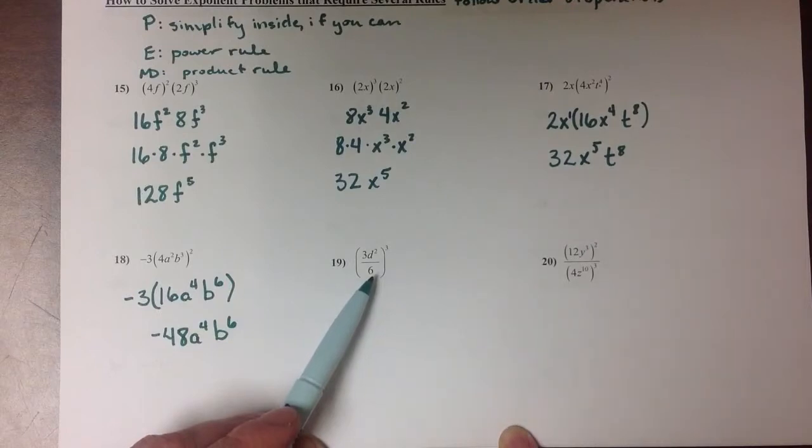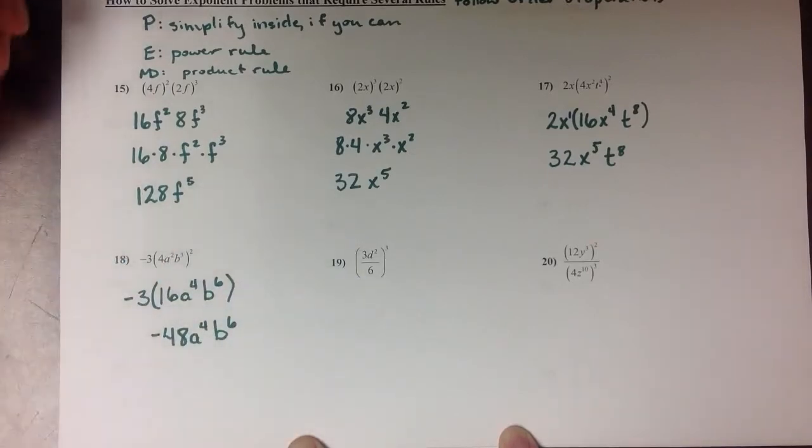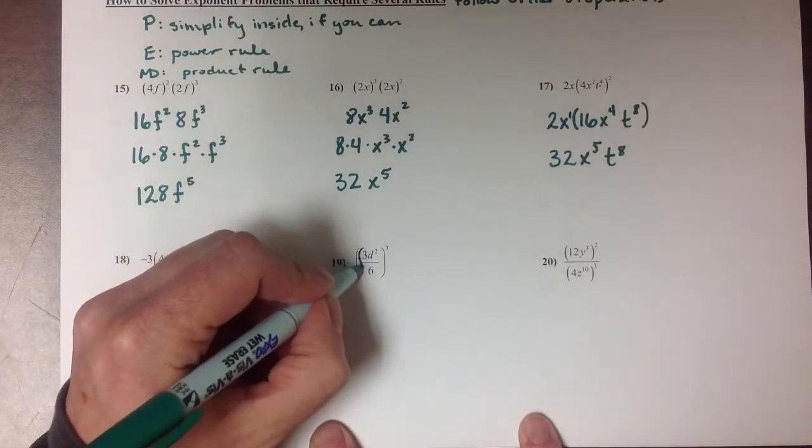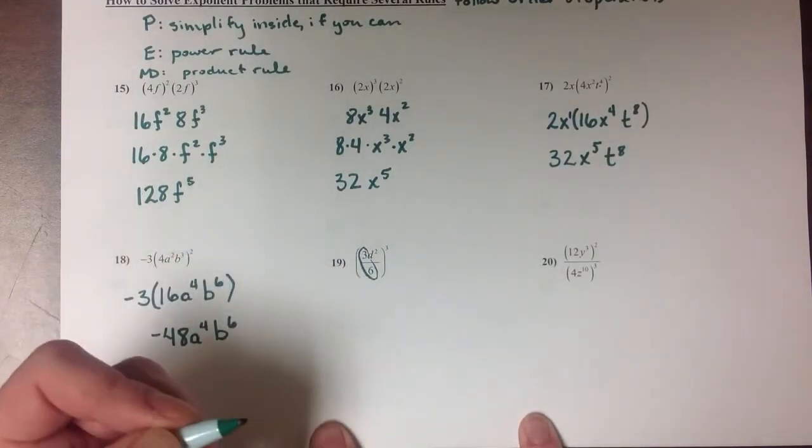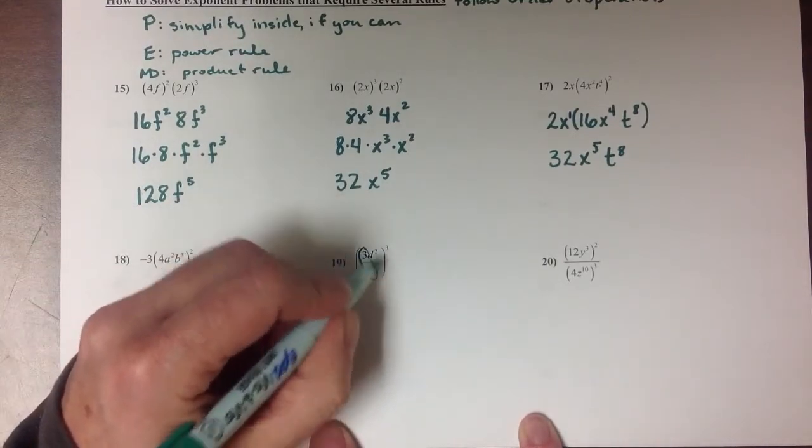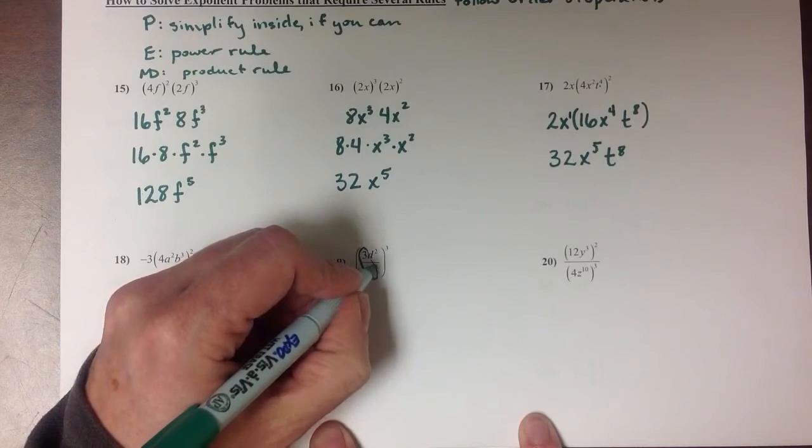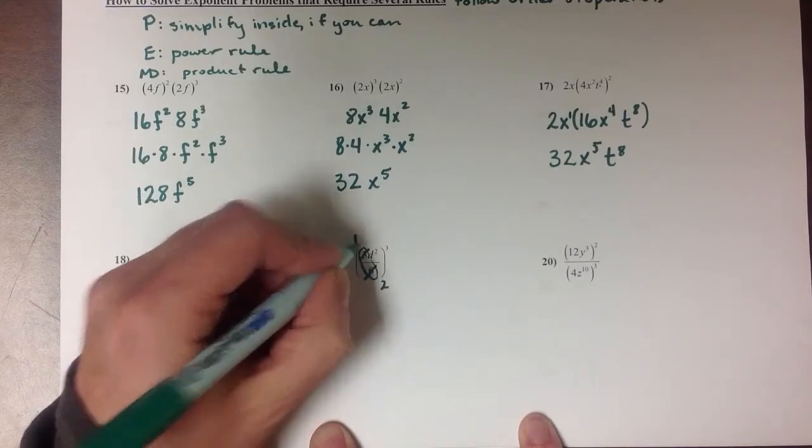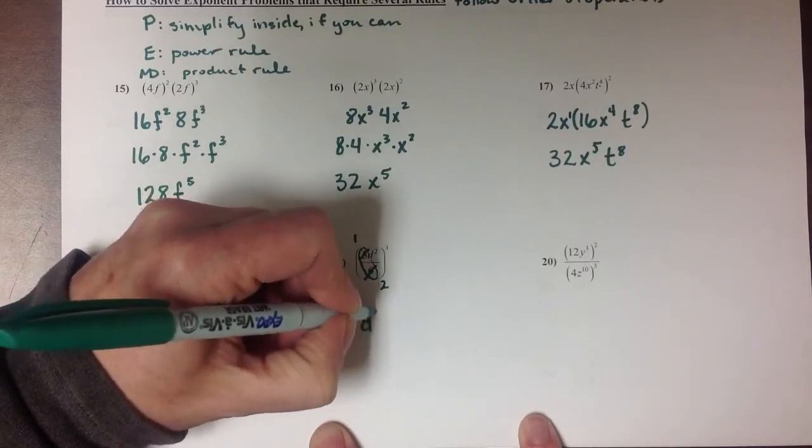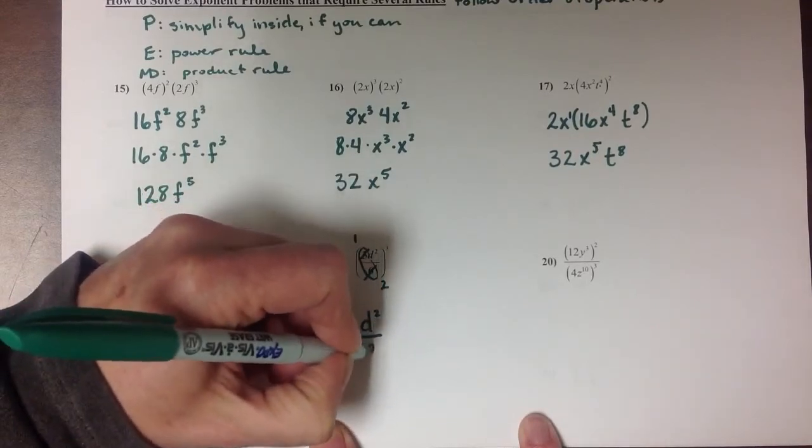Here we've got a combination of the power rule as it goes over a quotient. But remember this first step where we said that you can simplify inside parentheses if possible? Look at this fraction we have right here, this 3 sixths. I'm actually going to reduce within my parentheses first, making the 6 into a 2 and the 3 into a 1. So if I rewrite this, I now have d squared over 2 to raise to the 3rd power.